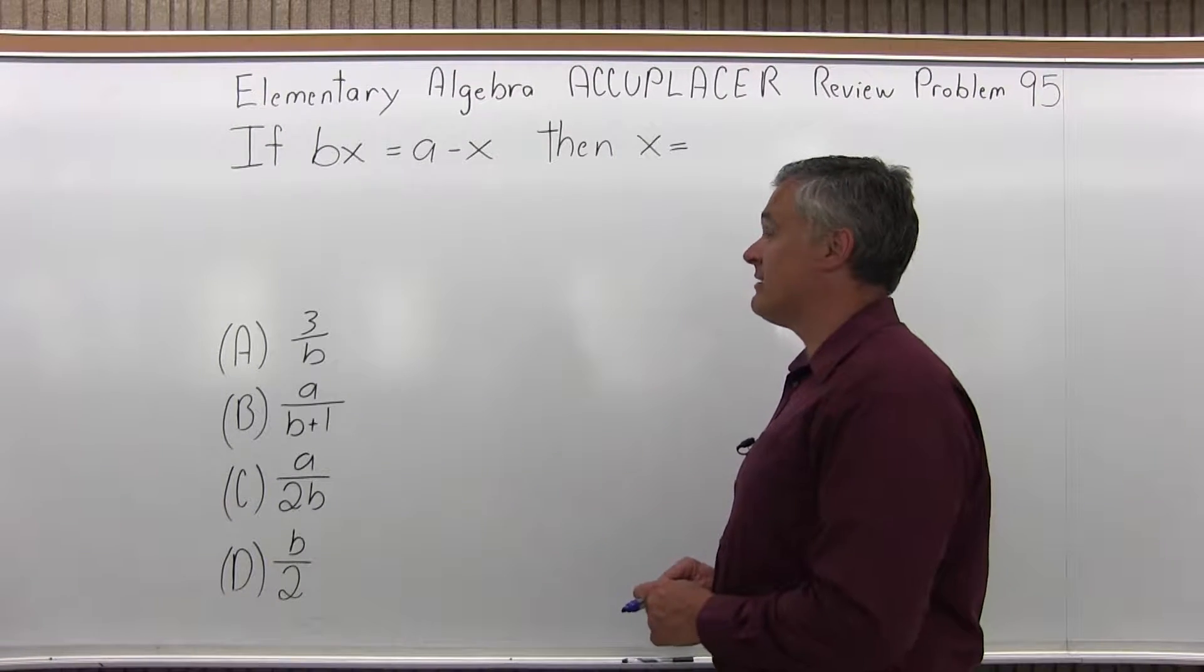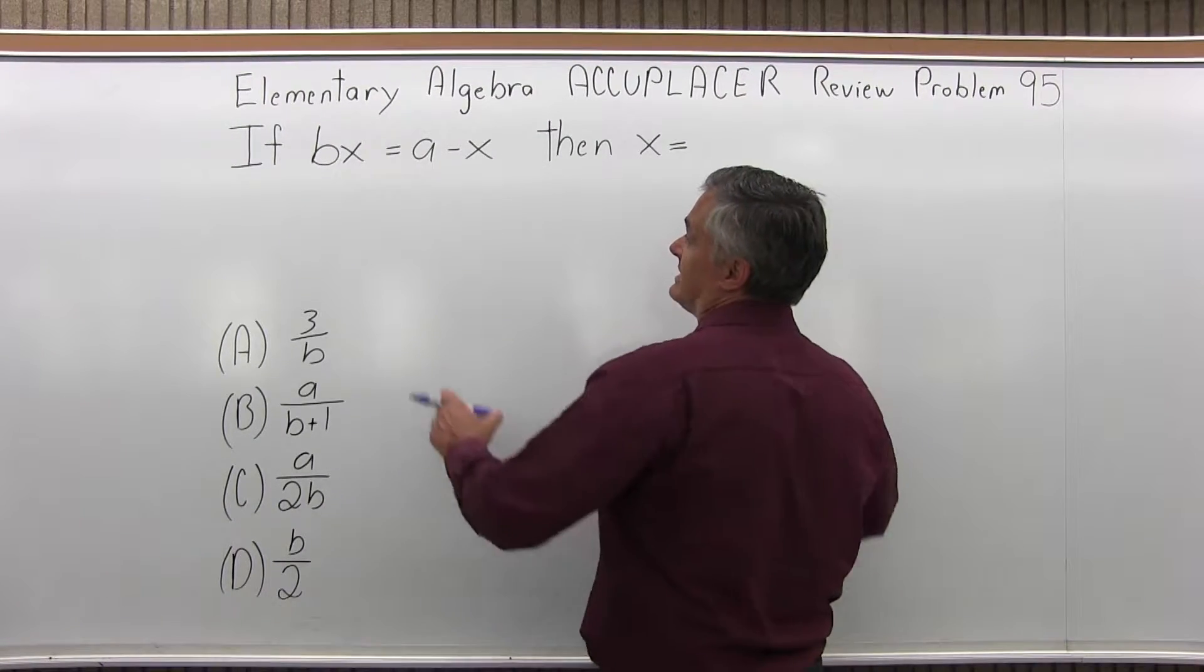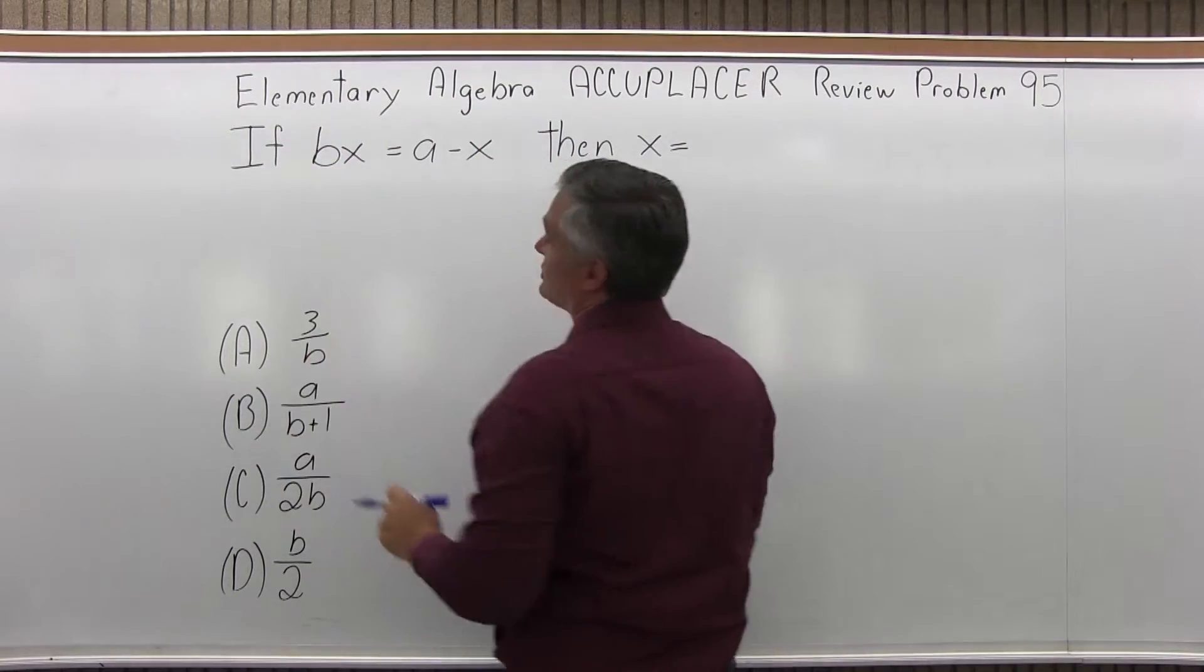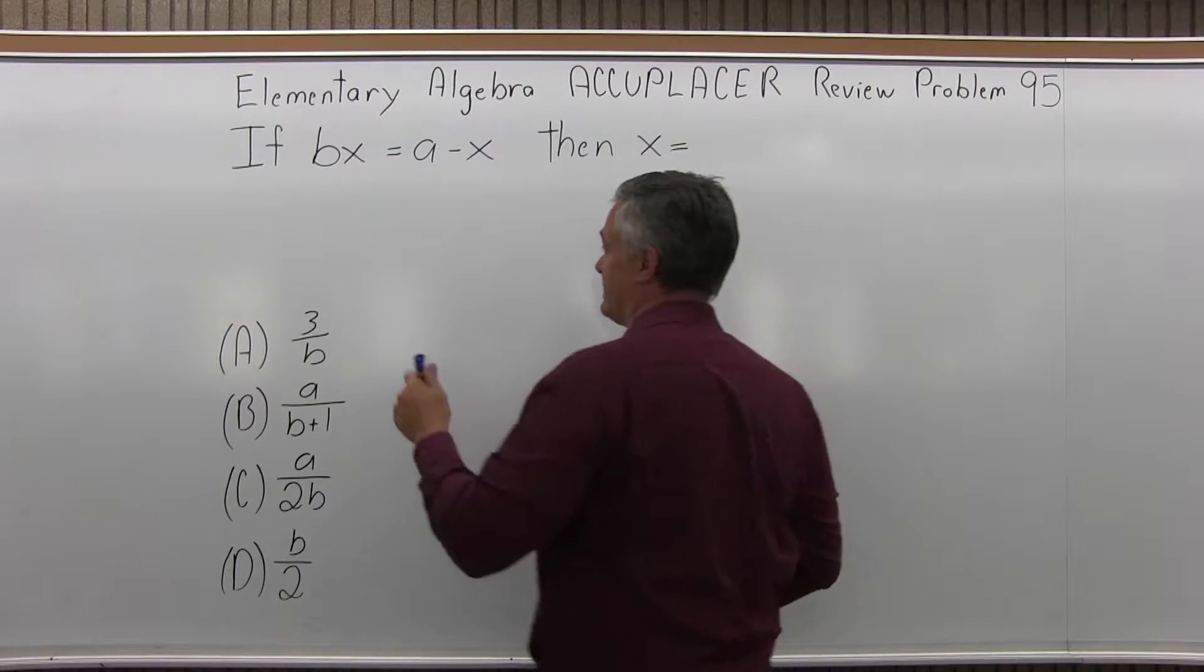So we want to get x by itself. Now the problem is, to start off with, x is on both sides of the equal sign. So let me get the x's all together on one side of the equal sign. Let's start with that.